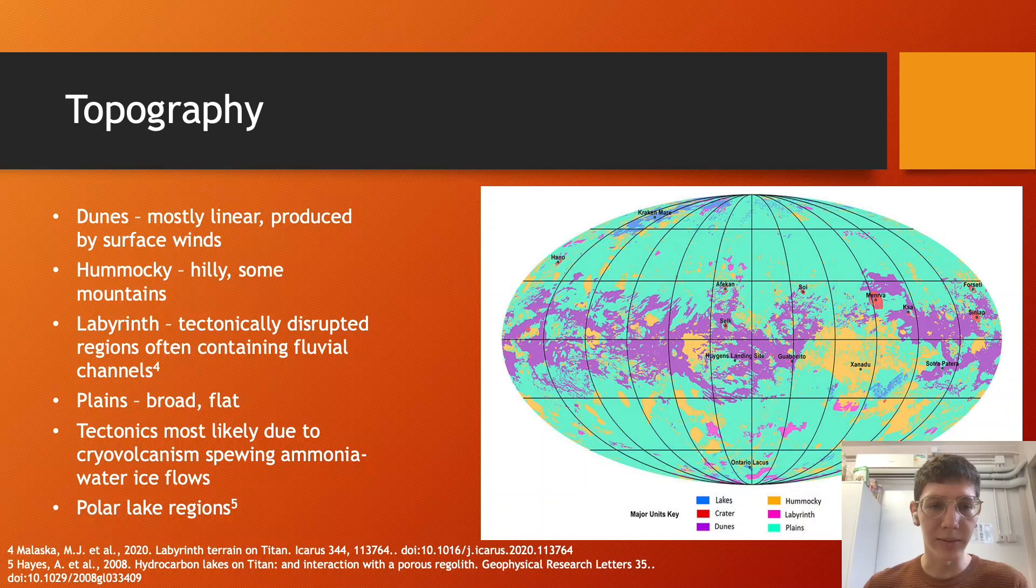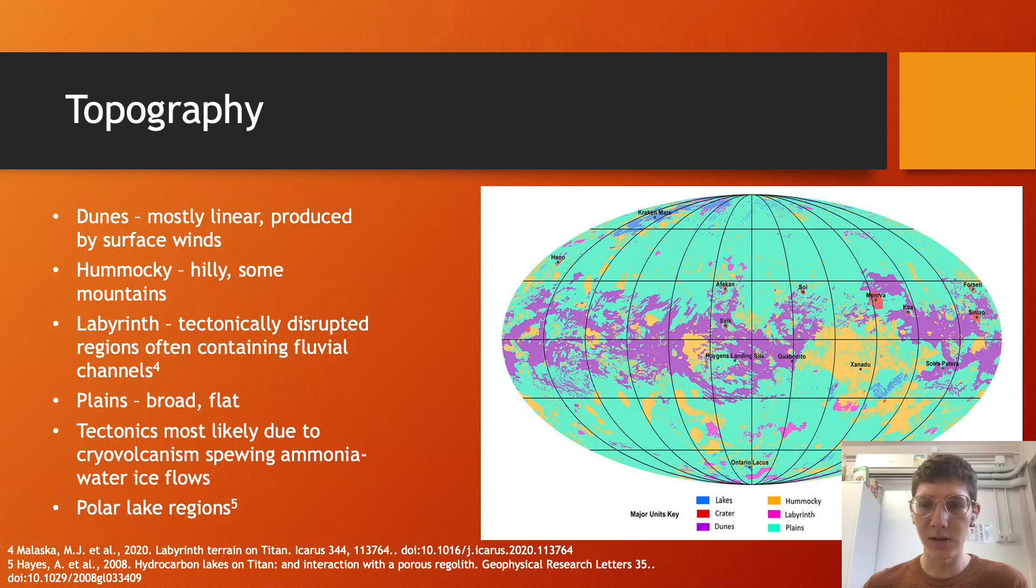Titan's south pole contains fewer lakes, but still shows many lacustrine features, such as Ontario Lacus. So both polar regions also appear to feature empty and partially filled basins, suggesting geologically recent surface exposures of liquid or saturated soils.